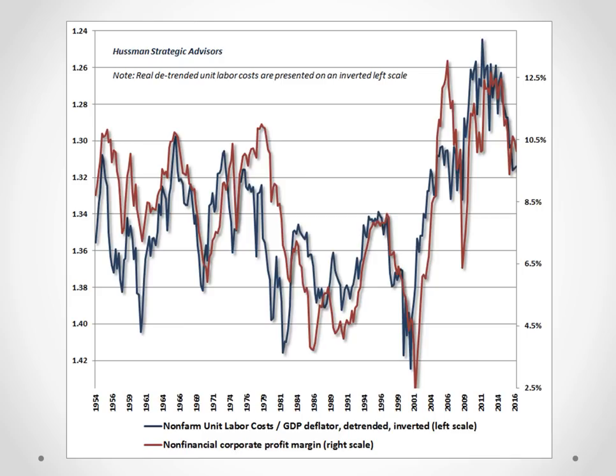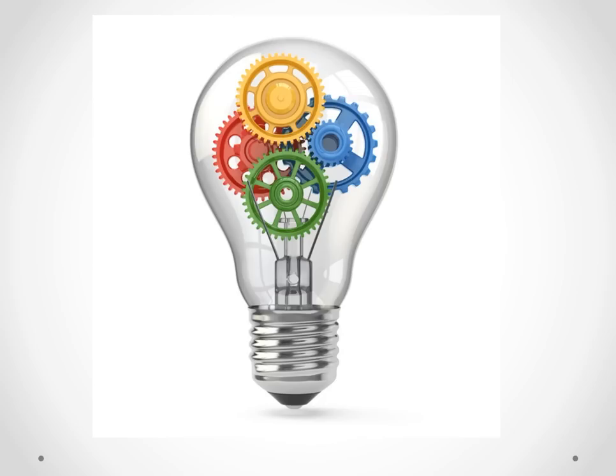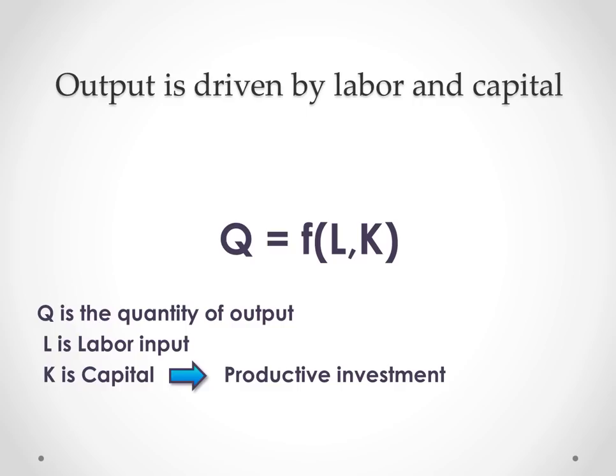One of the arguments for this proposal is that cutting taxes will spur new investment and really get the economy going. The issue isn't whether new investment is a good thing, but whether cutting taxes on record corporate profits is a good way to reach that goal. As an economist, I'm a big fan of productive investment. In our economic models, we call it capital with a big K — the quantity of output Q is a function of labor L and capital K.